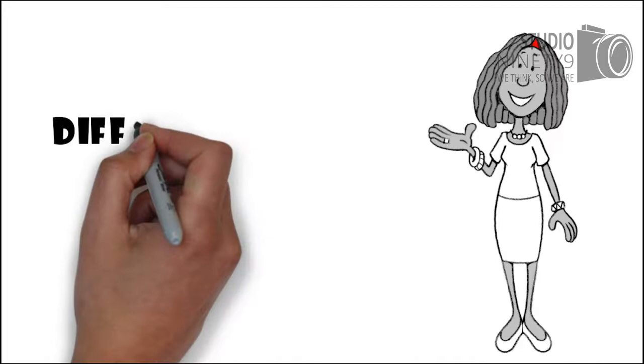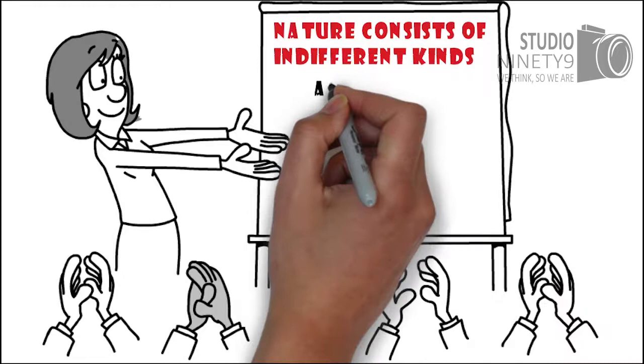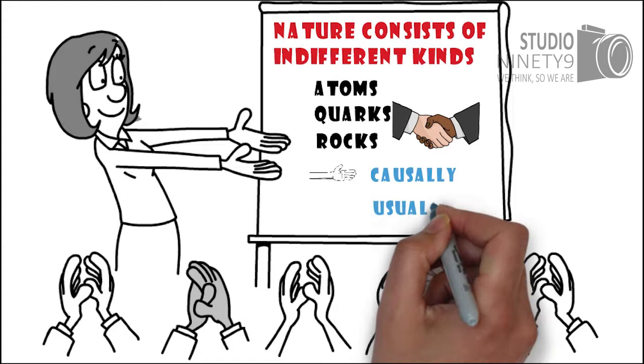So what is the difference between nature and culture? Nature consists of indifferent kinds such as atoms, quarks, or rocks, which just interact causally and usually admit of formulaic representation.